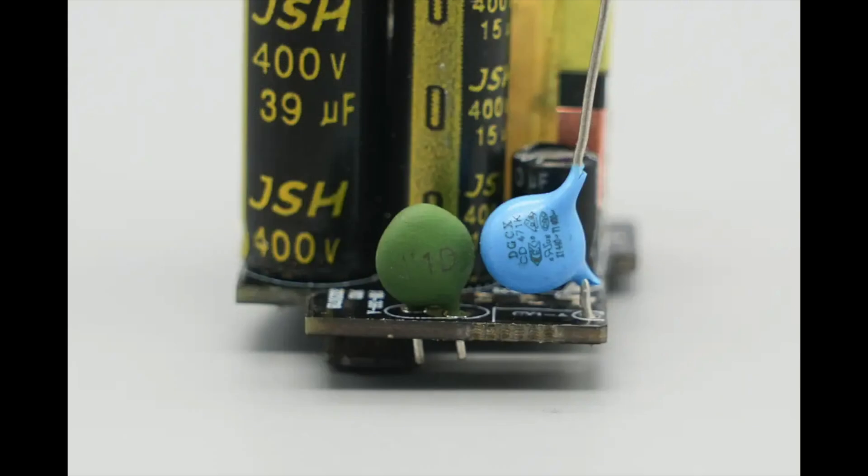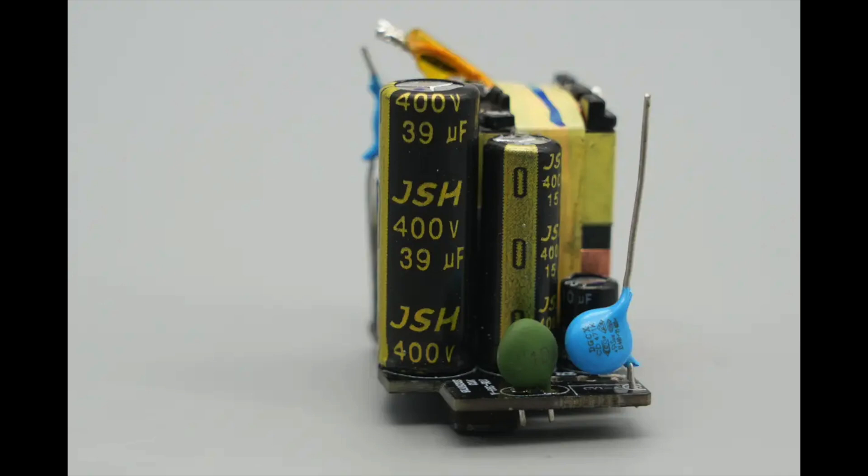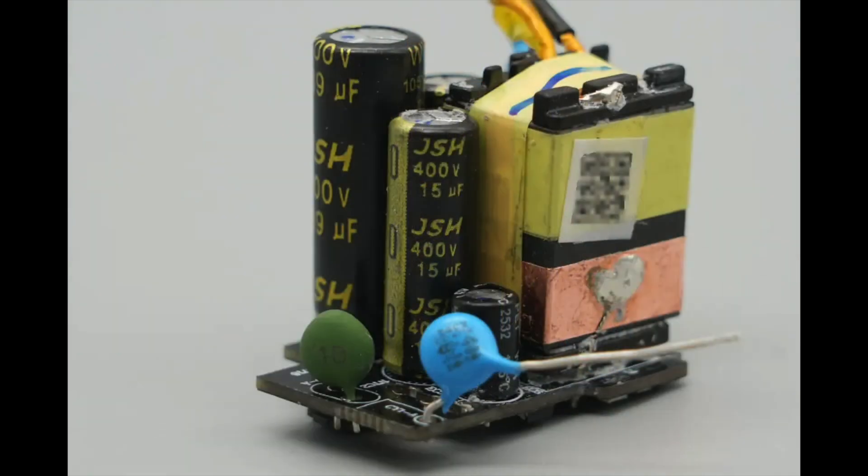The NTC thermistor is used to suppress in-rush current during power-on. The primary side has four high-voltage filter electrolytic capacitors, all from JSH, with two of them rated at 400 volts 10 microfarads and 400 volts 15 microfarads, respectively. The third capacitor is rated at 400 volts 39 microfarads. The fourth capacitor is rated at 400 volts 15 microfarads.